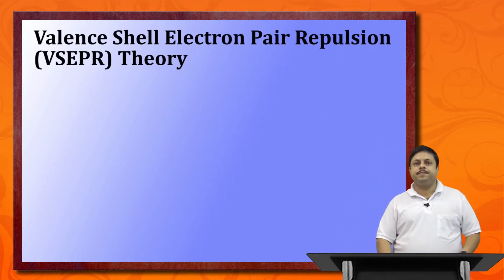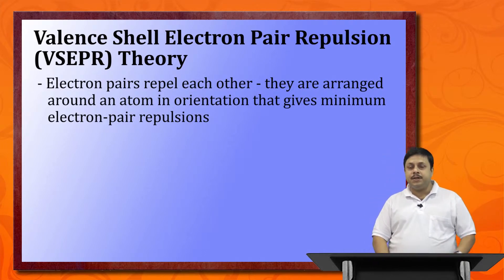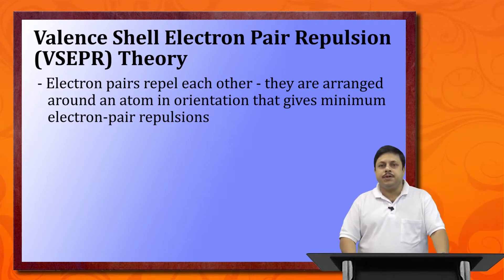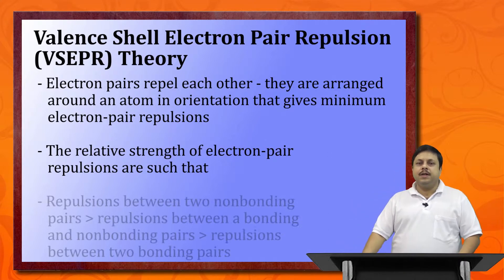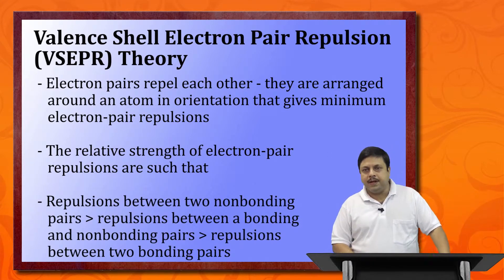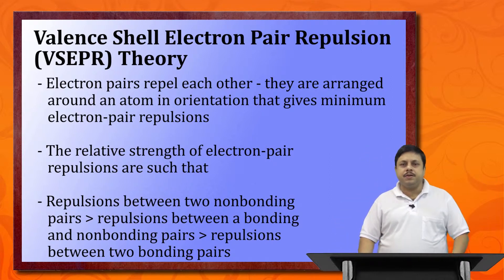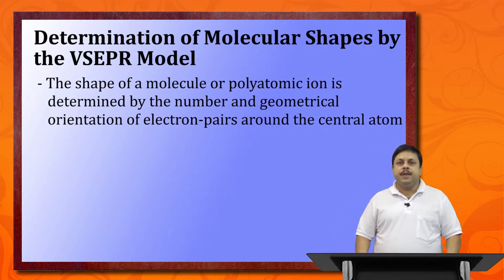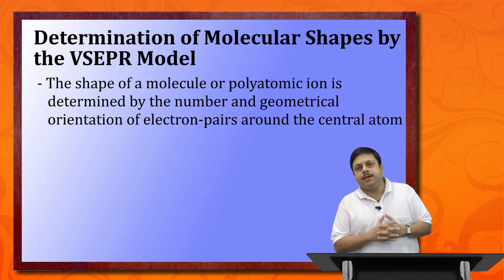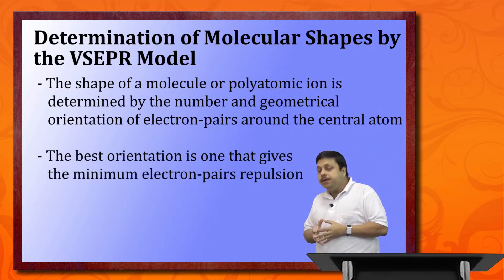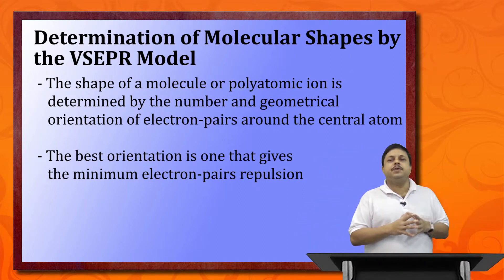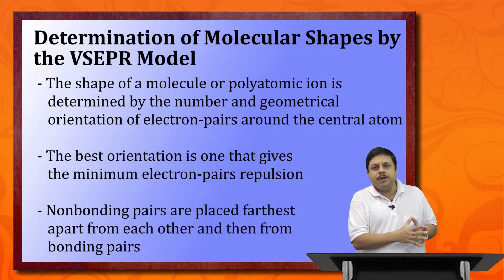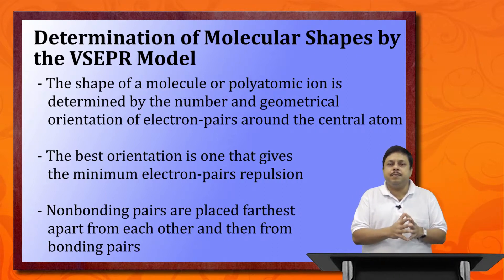Let us take up the valence shell electron pair repulsion theory first. The VSEPR model takes into account the fact that repulsion between bonded pairs of electrons and non-bonded pairs of electrons dictates the shapes of molecules. In the VSEPR model, it is assumed that the repulsion between two non-bonding pairs of electrons is the greatest.